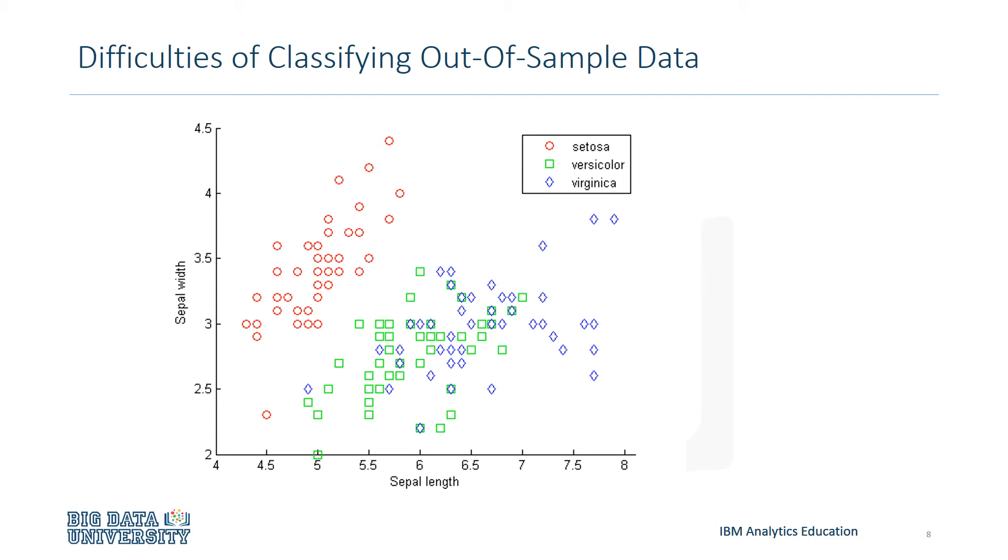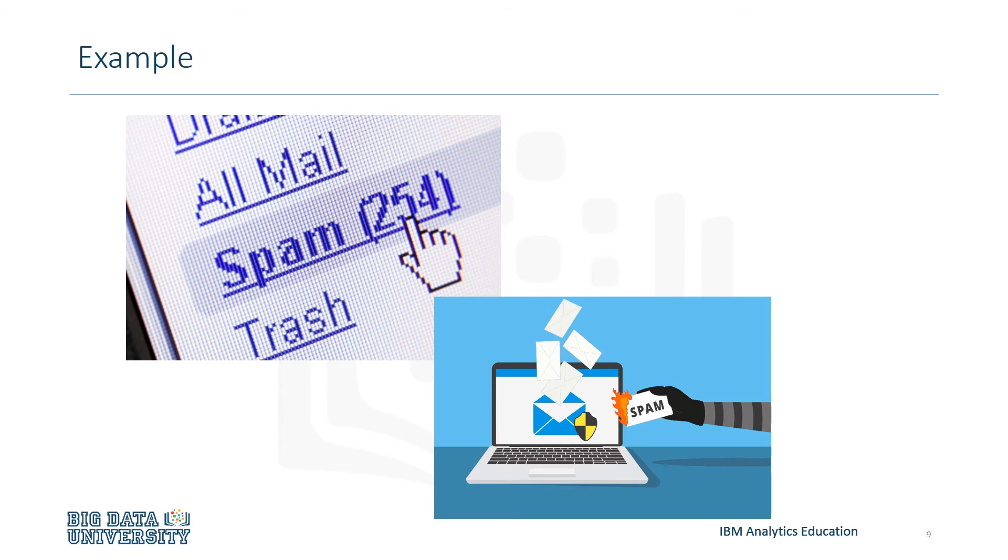Another key point to consider is that there are some difficulties when dealing with out-of-sample data. Out-of-sample data means data that's outside of the dataset used to train the model. Since we're dealing with out-of-sample data in the real world, it's hard to determine whether predictions using out-of-sample data will produce an accurate result. This is because we don't know what the result of the out-of-sample data should be, thus making it hard to determine the accuracy. Later on, we'll discuss how to evaluate a model's ability to classify out-of-sample data.